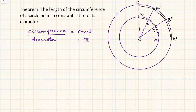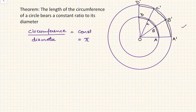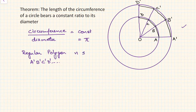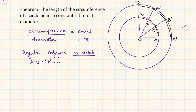To prove this, let us draw two concentric circles with common center O, as shown in the figure. Let us also inscribe a regular polygon whose vertices are A', B', C', D', and so on. This is an n-sided regular polygon, where regular polygon means all sides are equal.